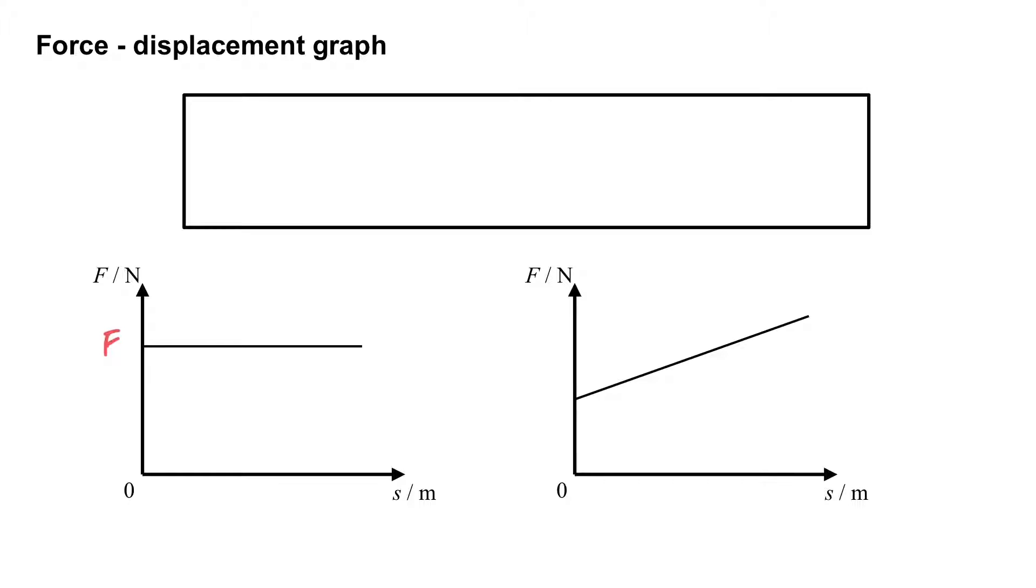And we will take a look on the force and displacement graph. For the force and displacement graph, if you look at the area, which is the force times the displacement, that is the work done. So the area under the force displacement graph is actually the work done of the object, which is equal to the work done by the force.